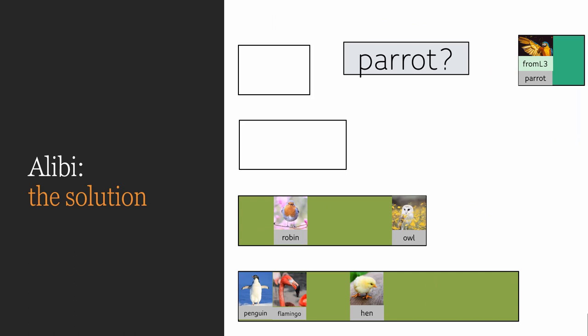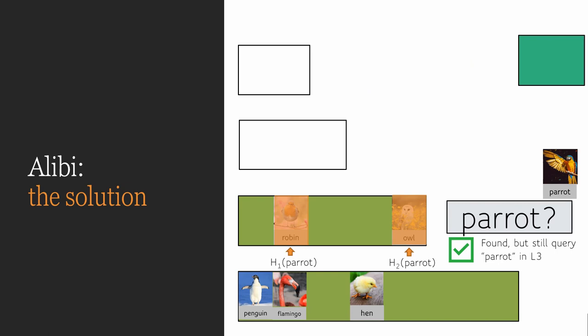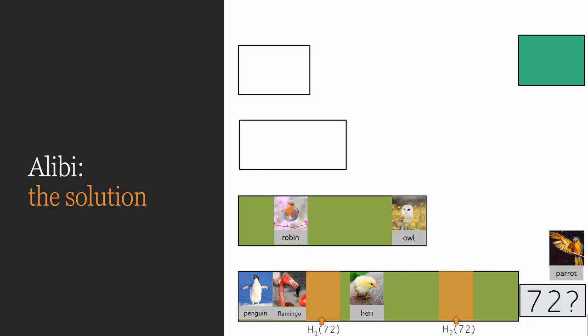The solution is actually quite simple. If any item is placed in the stash, it also needs to remember which table it originally came from. Then, whenever it is queried, the table at which it originally came from needs to be queried with the original query. So if we find the parrot and the parrot originally came from level three, the protocol should still query the original hash locations of the parrot in level three. In subsequent levels, it should, as before, query a random value, since the parrot may indeed have been queried at those levels before.